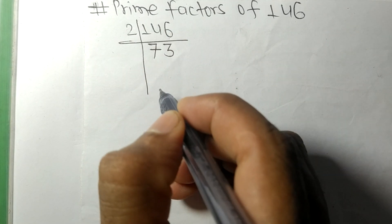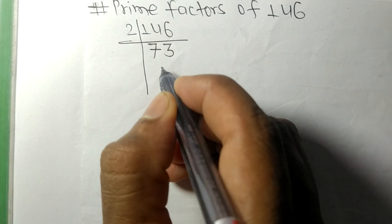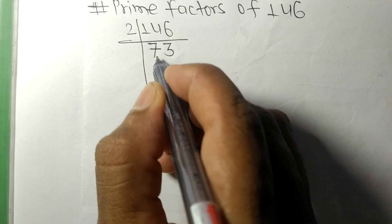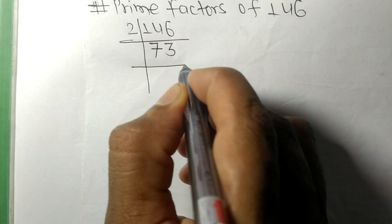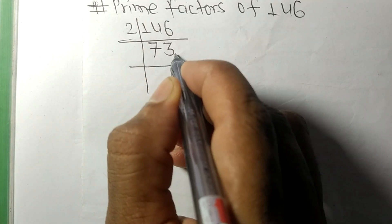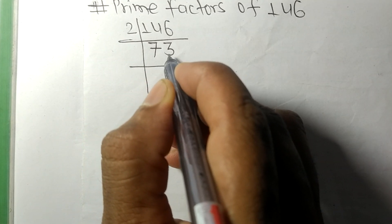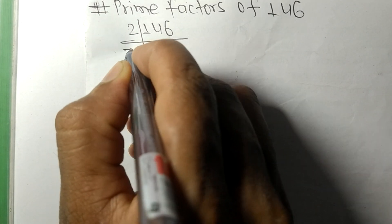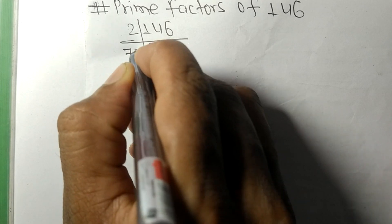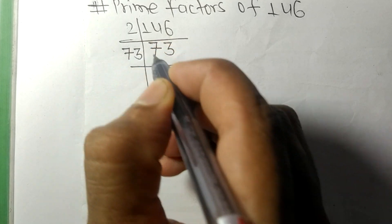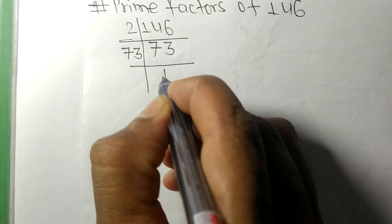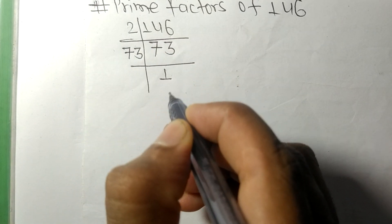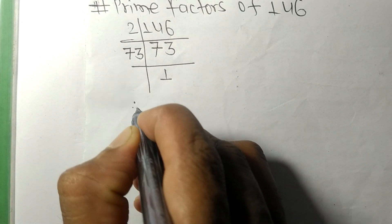Now we have 73, which is a prime number, so it is divisible by 73 itself, and we get 1 here.